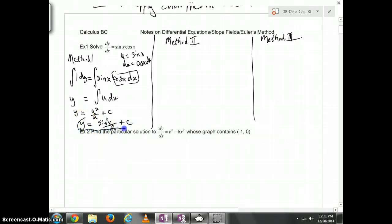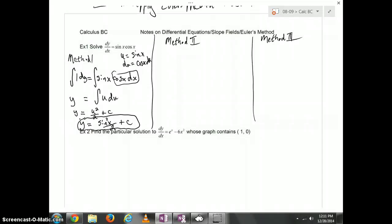The sine of X would become a U. Cosine of X DX is just a DU. If we were integrating U with respect to U, we'd get U squared divided by 2 plus a constant. We're going to plug that U value of sine of X back in. We'd have the sine of X squared all over 2 plus C. We've dealt with this type of problem before.